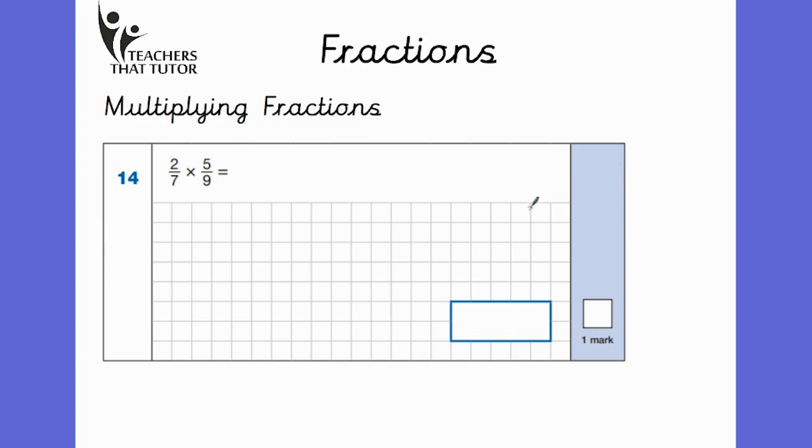The first one is multiplying fractions. Now, although this can look confusing at first, all you have to do here is to multiply the numerators, which are the top numbers. Two times five is 10. And then multiply the denominators, which are the bottom numbers. Seven times nine is 63. And that's it.